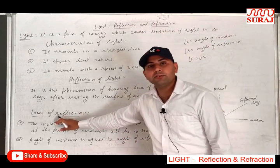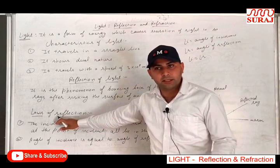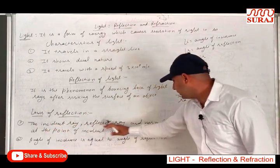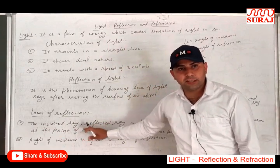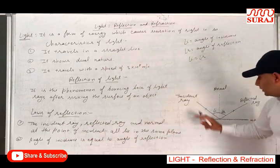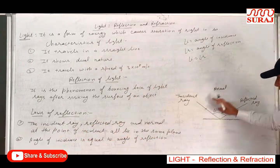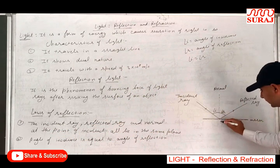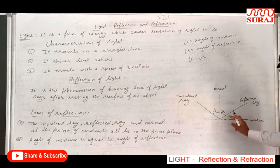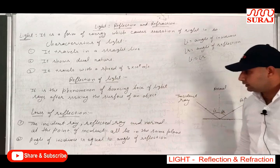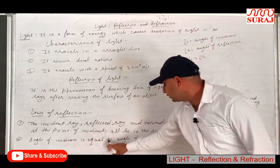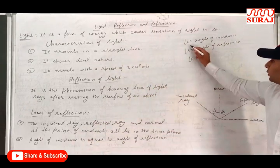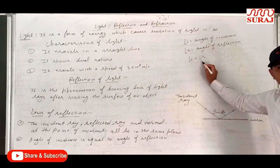There are two laws of reflection. First, the incident ray, the reflected ray, and the normal at the point of incidence all lie in the same plane. Second, the angle of incidence is equal to the angle of reflection — that is, angle I is equal to angle R.